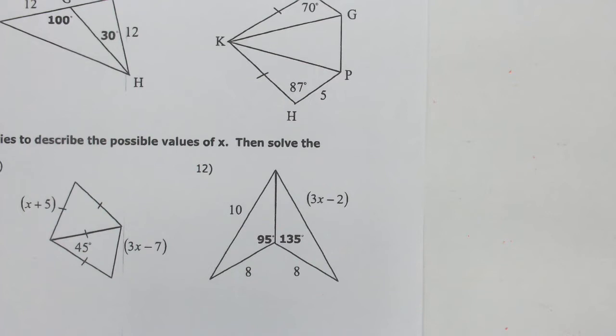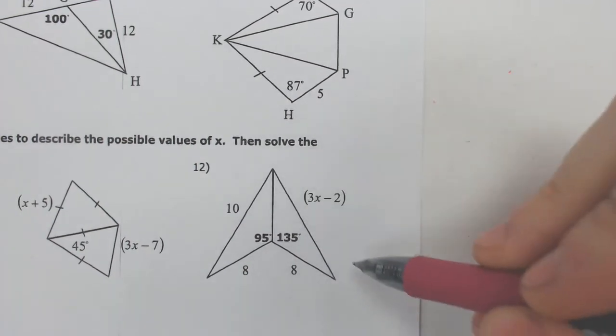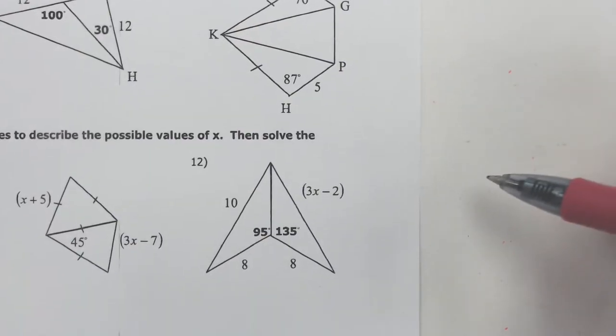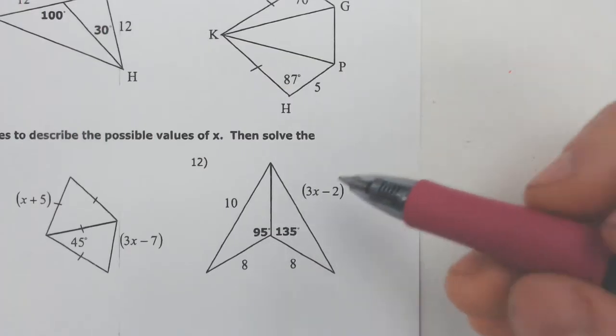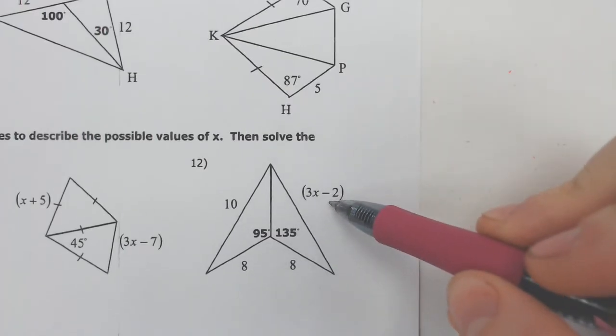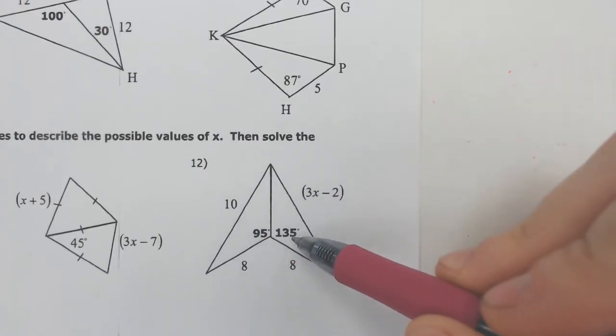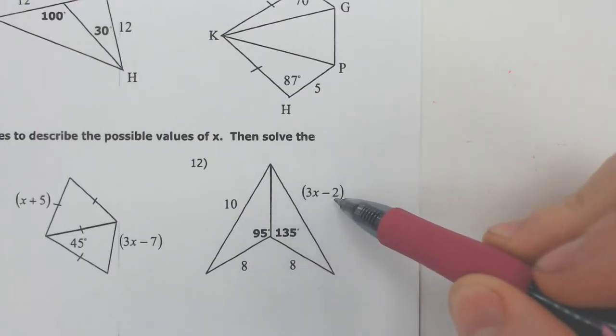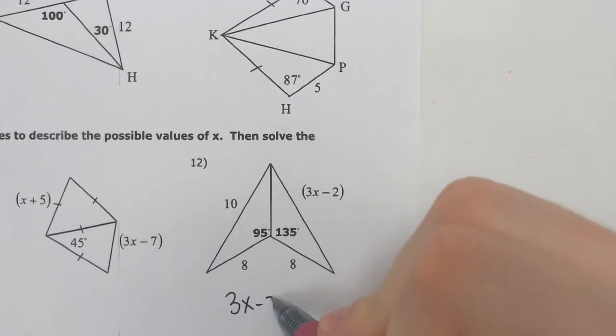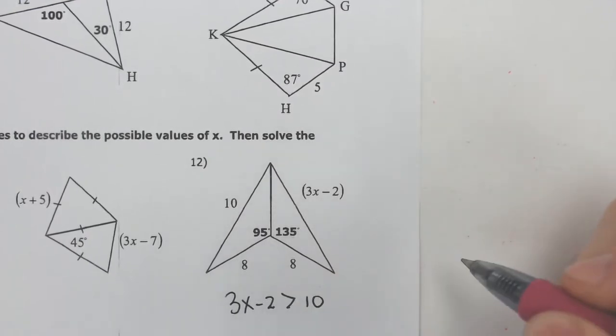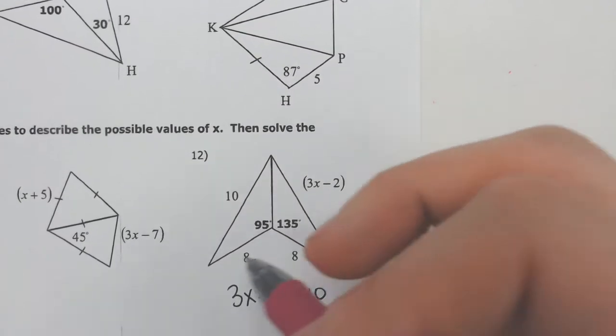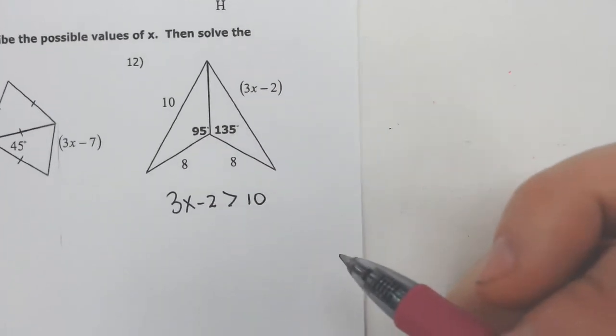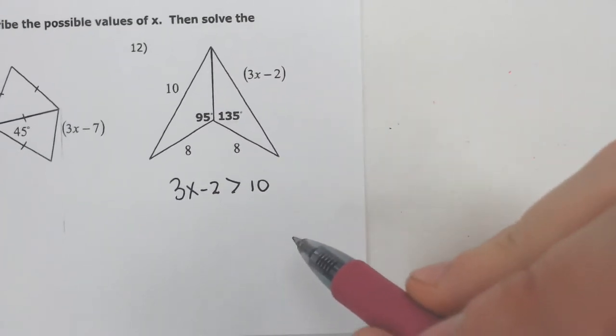Sometimes when you have an inequality with two triangles, you also have to solve an equation. When you have the sides, it's no big deal. In a later example, you're going to have the angles, and it's going to be a big deal. But with the sides, it's really easy. Which one's bigger? 3X minus 2 or 10? 135 is way bigger than 95, which means 3X minus 2 has to be greater than 10. Again, you could have written it backwards.